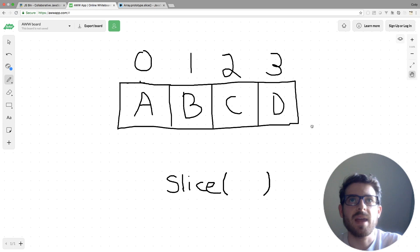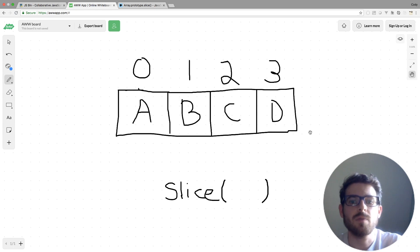Scrolling up here, I have an example array of length four that has four elements in it, elements A, B, C, and D, and these are the indexes above each element.